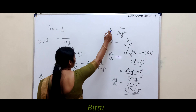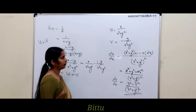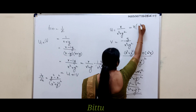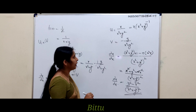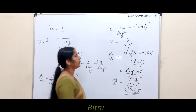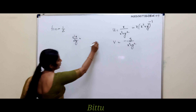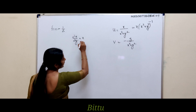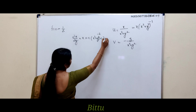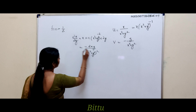Differentiating u with respect to y: treating x as constant, we use the chain rule on x·(x² + y²)^(−1). Its derivative gives ∂u/∂y = −2xy/(x² + y²)². Next, differentiating v = −y/(x² + y²) with respect to x, treating −y as constant: ∂v/∂x = 2xy/(x² + y²)². And differentiating v with respect to y gives ∂v/∂y = (y² − x²)/(x² + y²)².